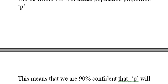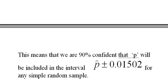So we're going to turn the tables on this and turn it around, and we're going to say, this means that we are 90% confident that P will be included in the interval P-hat plus or minus the sampling error for any simple random sample, including ours.